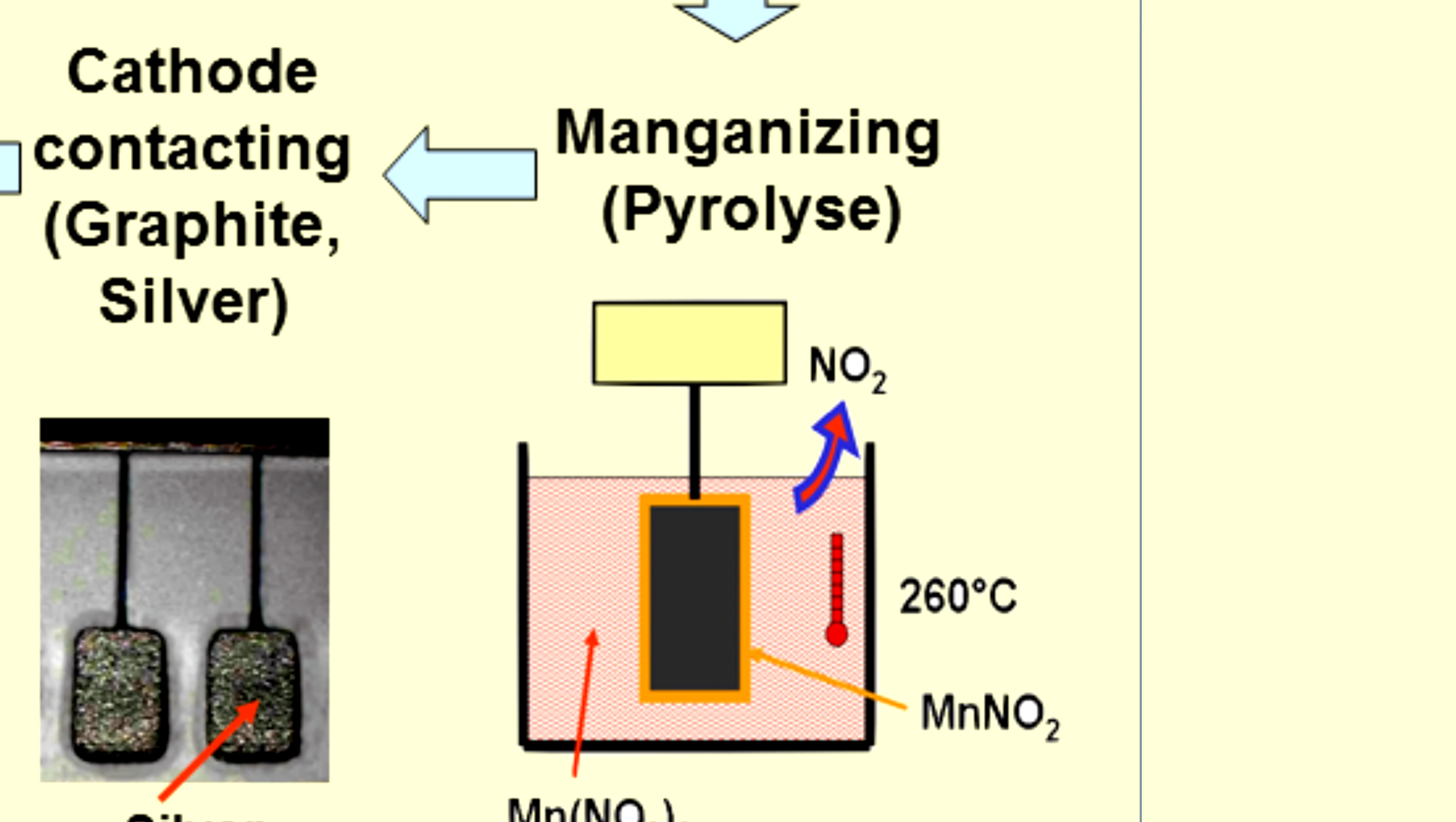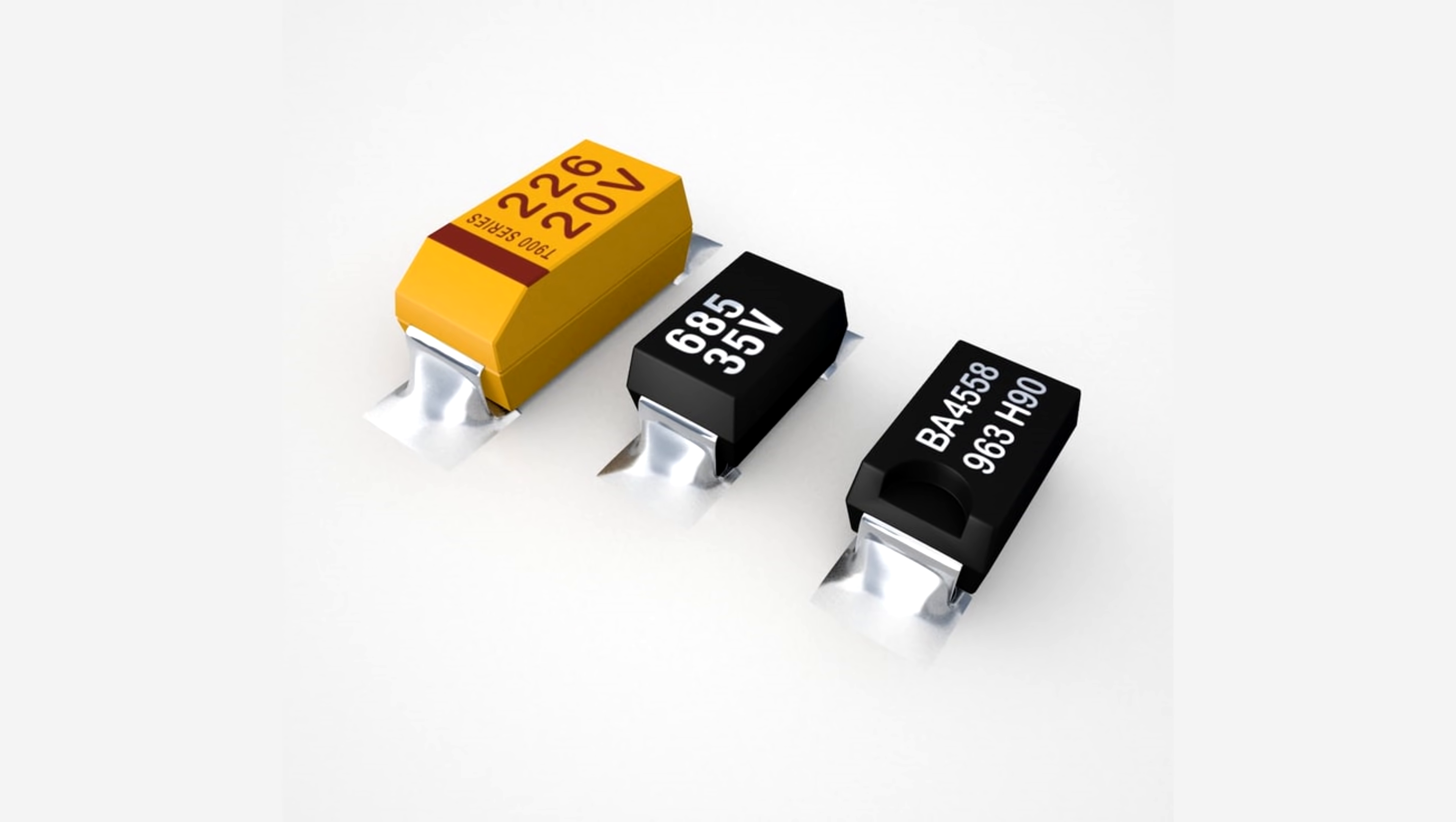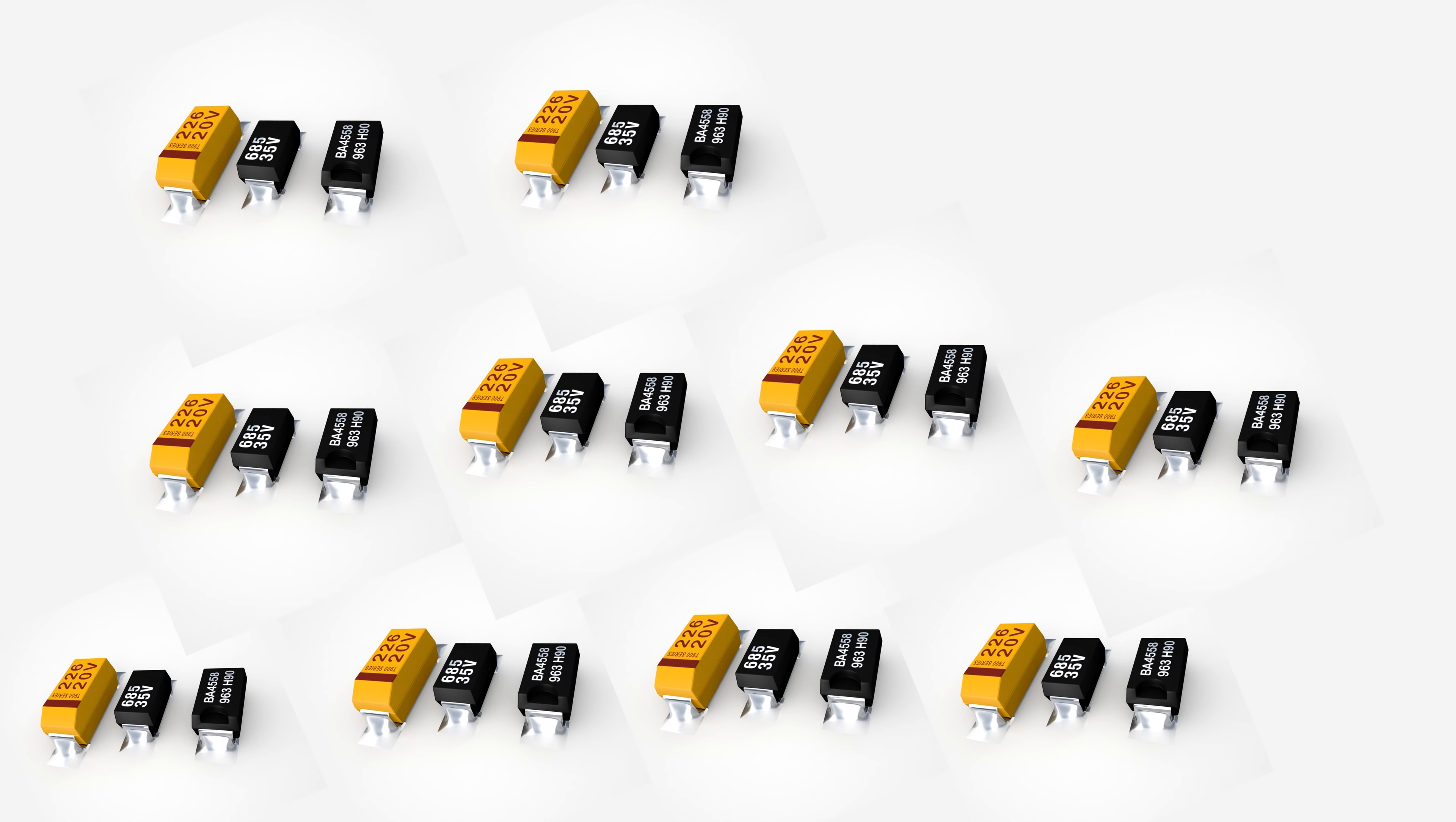Next, the anodized tantalum sponge is covered with a layer of cathode of manganese dioxide. Then on top, a layer of graphite and a layer of silver is added, and now the capacitor is ready. The advantage of these capacitors is that they can be made extremely small due to the very thin dielectric film.